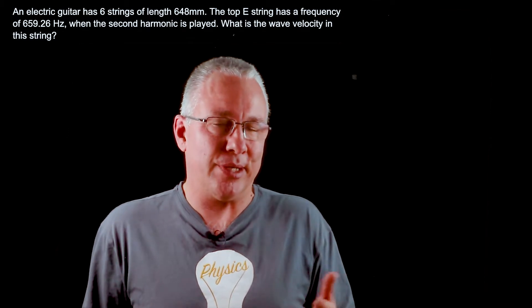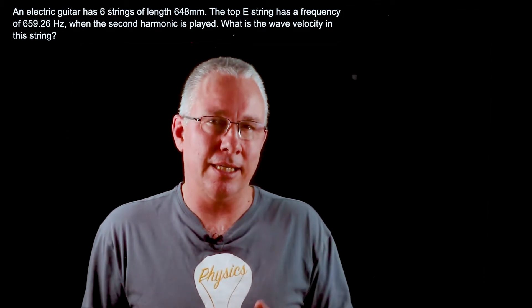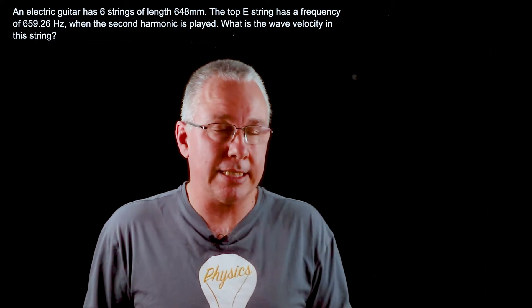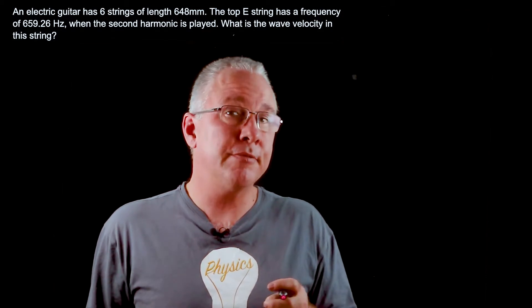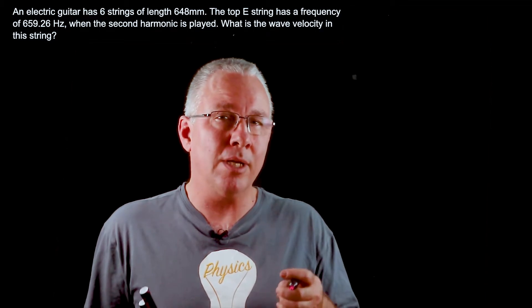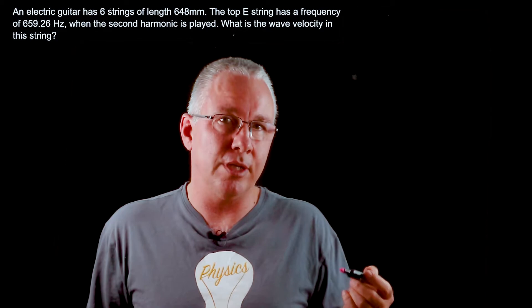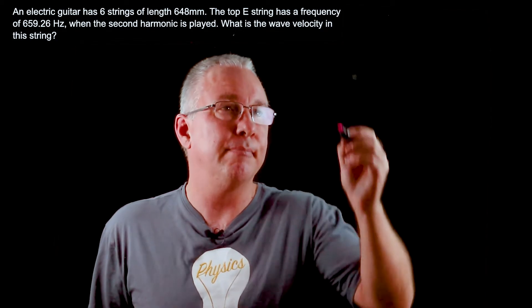Because it's strings, I'm going to use a classic example, a guitar string. A classic acoustic guitar has six strings that have different masses but they all have the same length, and the standard guitar string is usually 648 millimeters.